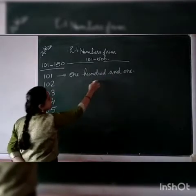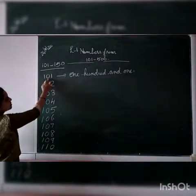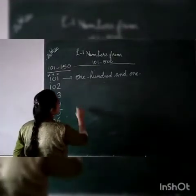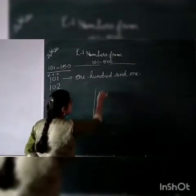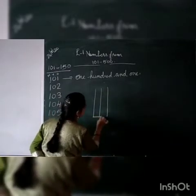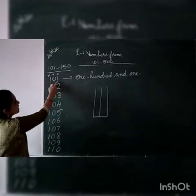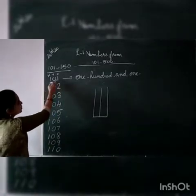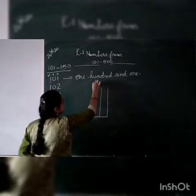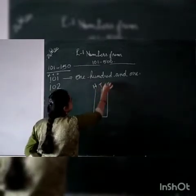101. Which are the numbers? 1, 0, 1. Then let's see. 101. How to show 101 on abacus? Let's see. In 101, how many digits are here? 1, 2, 3. So, we have to draw 3 lines. Then write place value 100, 10s and 1s.